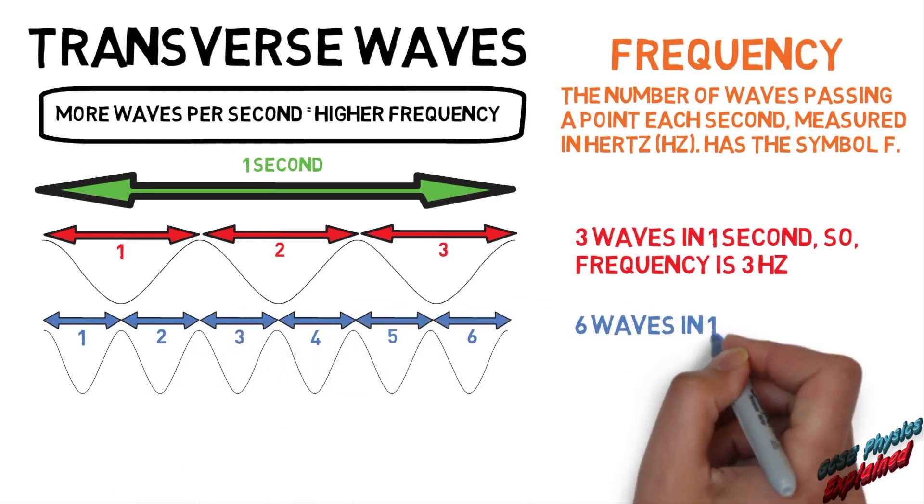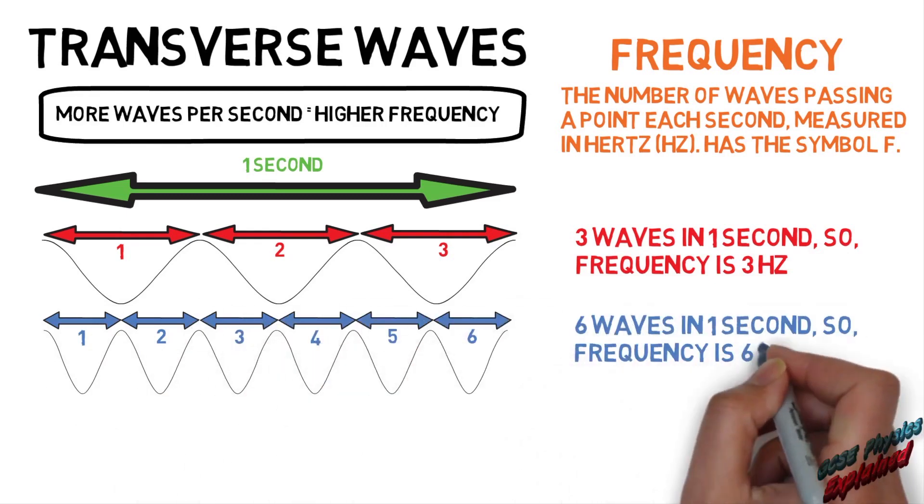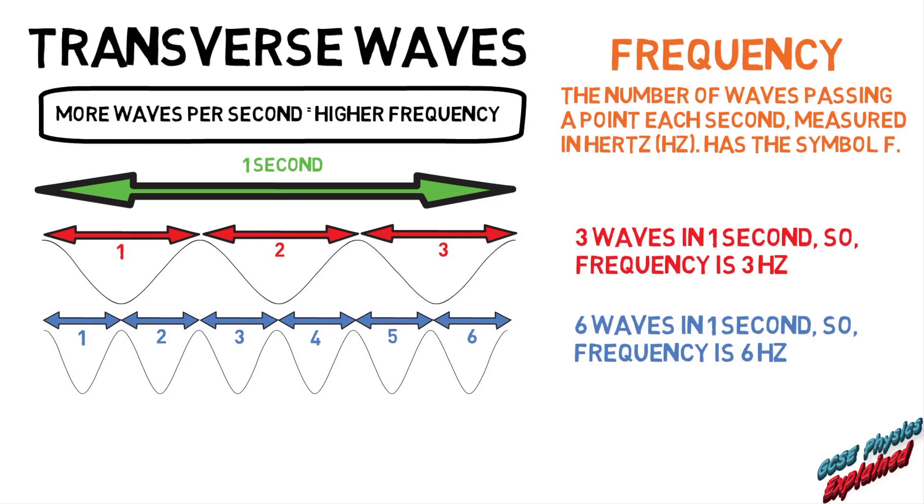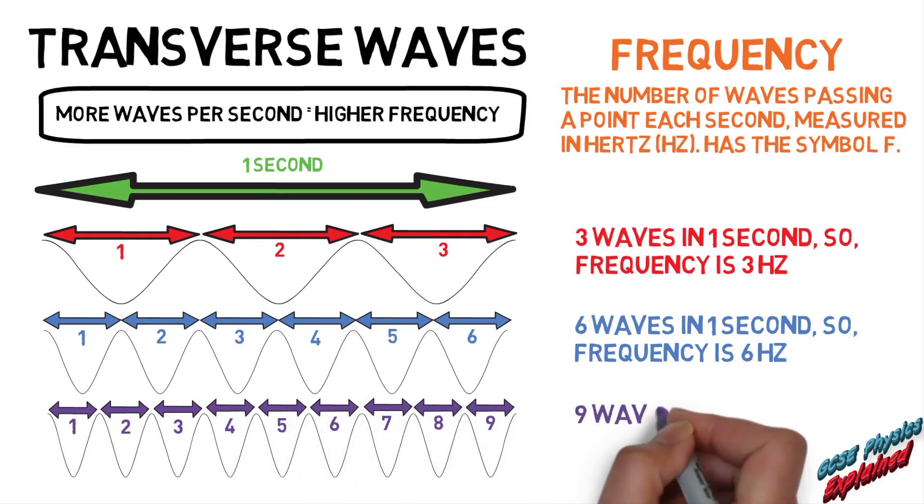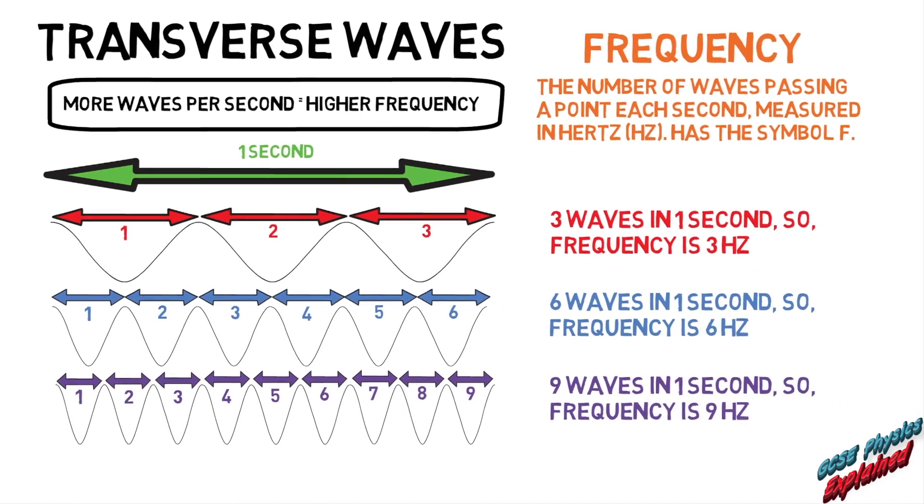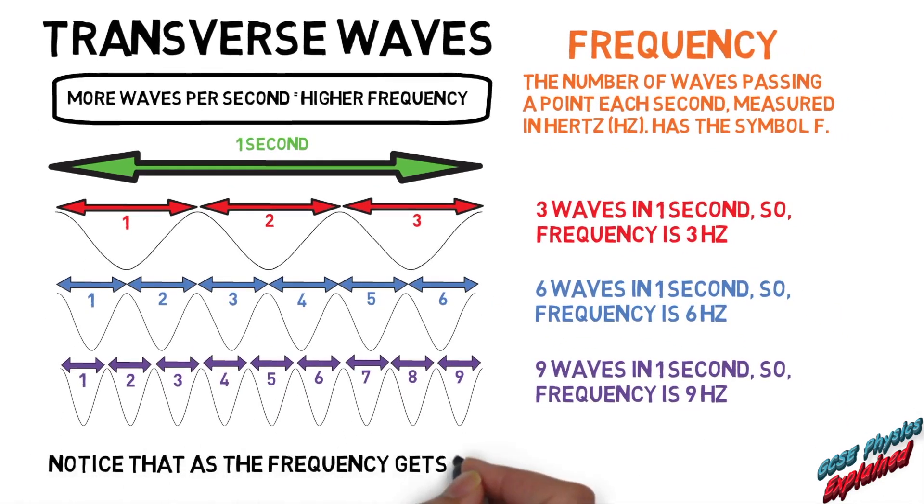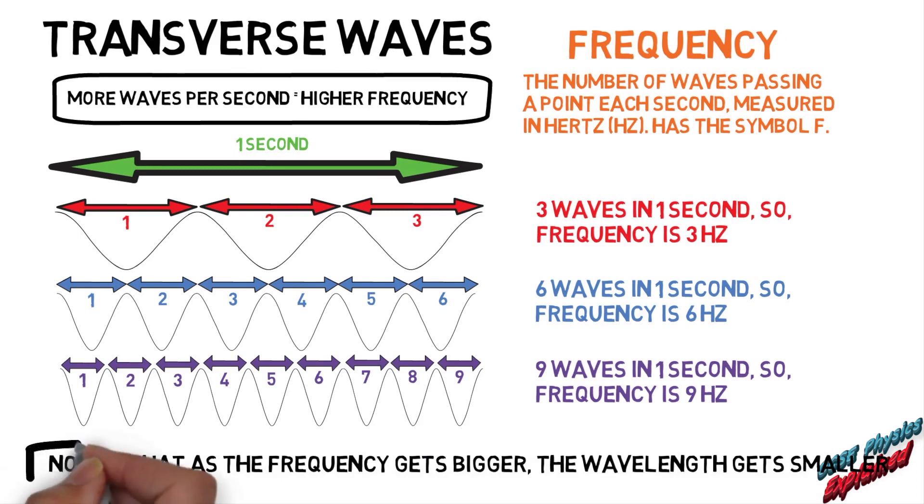There are six waves in one second, so frequency is six hertz. There are nine waves in one second, so frequency is nine hertz. Notice that as the frequency gets bigger, the wavelength gets smaller.